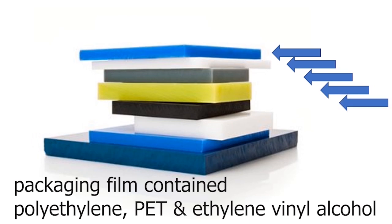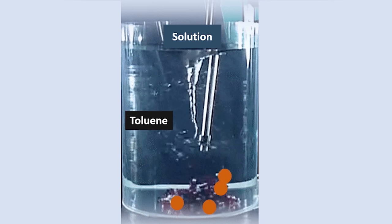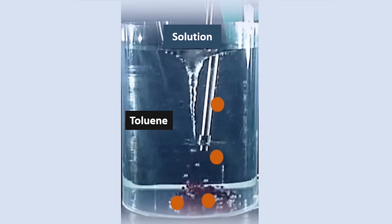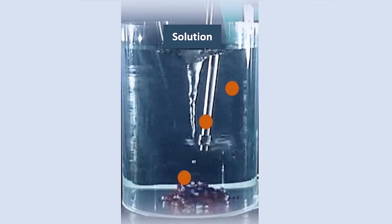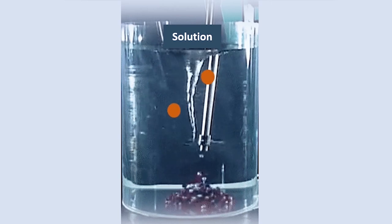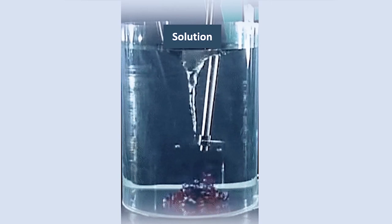They stirred the film into a toluene solvent first, which dissolved the polyethylene layer. Now one component is dissolved, which they separated from the mixture.